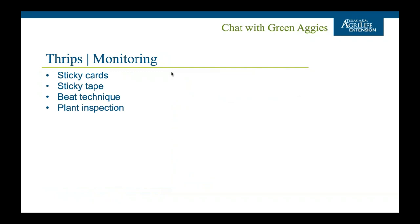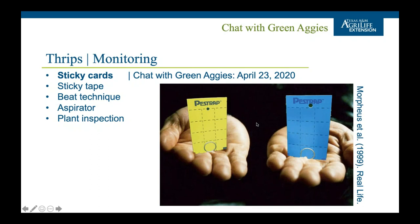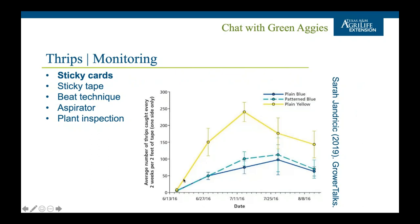When it comes to monitoring for thrips, there are a few handy techniques. Sticky cards are one option — if you go back to our video from April 23rd, we did a shallow dive into thrips color preference, comparing blue versus yellow cards. In summary, yellow appears to be more effective. Looking at average thrips caught every two weeks per two feet of sticky tape, yellow consistently trapped more thrips — up to 250 per two feet of tape — compared to blue. Yellow seems the more consistently effective choice.